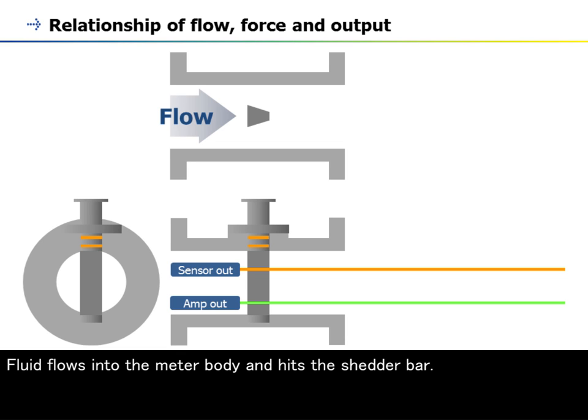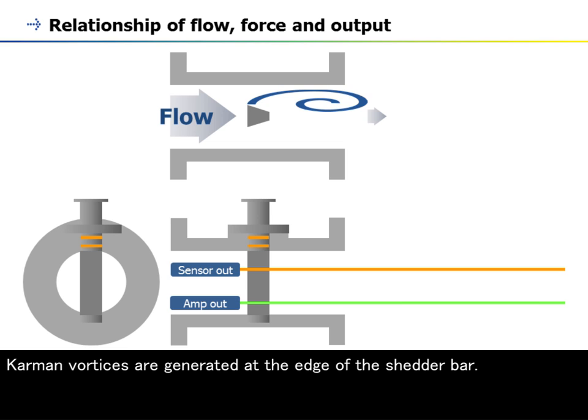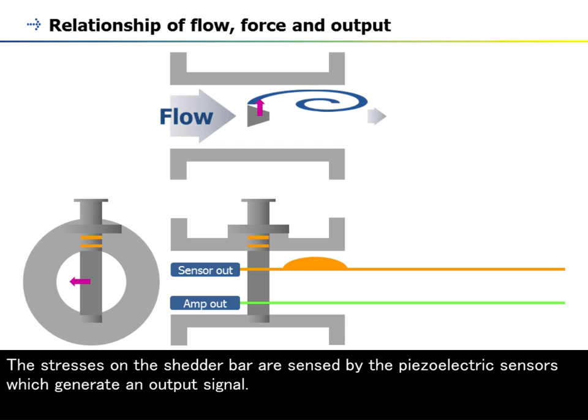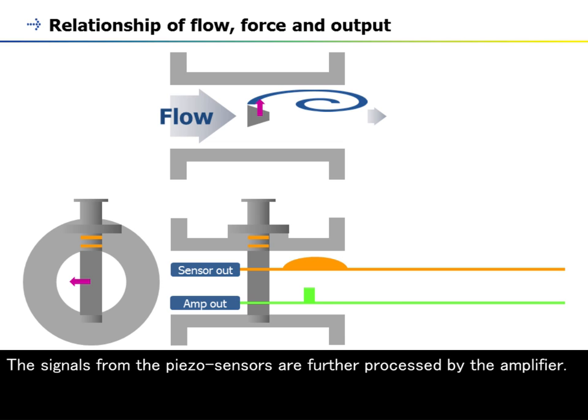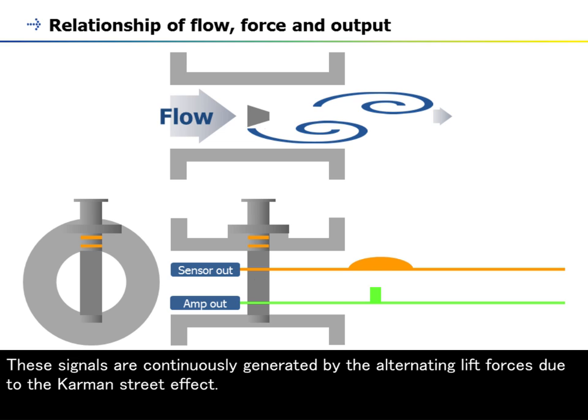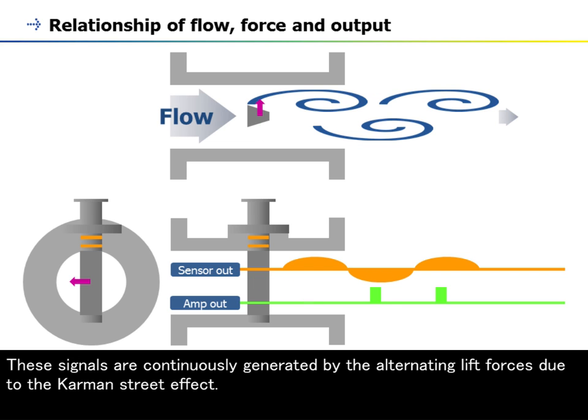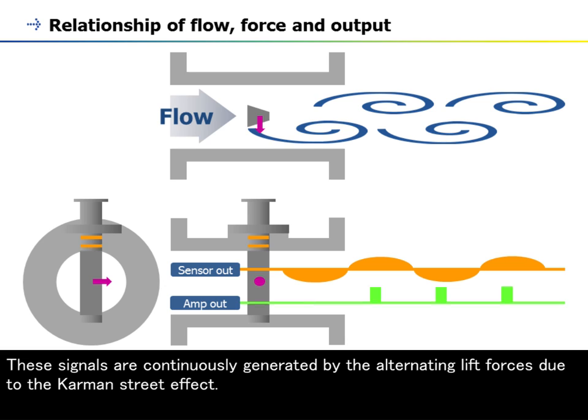Fluid flows into the meter body and hits the shedder bar. Karman vortices are generated at the edge of the shedder bar. Karman vortex generates a lift force in the shedder bar. The stresses on the shedder bar are sensed by the piezoelectric sensors which generate an output signal. The signals from the piezo sensors are further processed by the amplifier. These signals are continuously generated by the alternating lift forces due to the Karman Street effect.